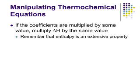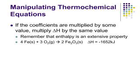There are some ways we can manipulate thermochemical equations. One thing we can do is to multiply the coefficients by some value, usually an integer, but it could be a fraction if that's what you needed. If you do this, you have to multiply delta H by the same value. This is because enthalpy is an extensive property. The more you react, the more energy will be involved. Let's show you what I mean.